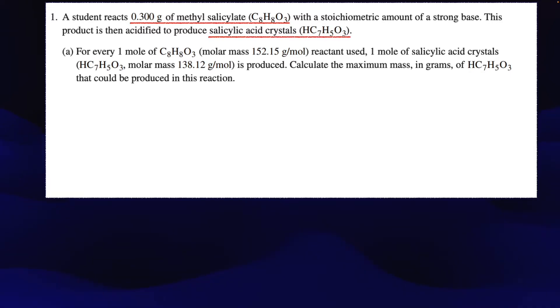So first things first. A student reacts 0.300 grams of methyl salicylate with a stoichiometric amount of a strong base. This product is then acidified to produce salicylic acid crystals. So we've got some important information. We've got how much we're starting with, we know that we're mixing with a strong base, and we know that what we're trying to get are these crystals.